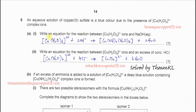Part one: write an equation for the reaction between the hexa aqua copper(II) ion and sodium hydroxide. This is a ligand exchange reaction. The hydroxide will substitute two H₂O in the hexa aqua copper(II) ion to form copper hydroxide, which is a precipitate. The two H₂O molecules that have been substituted are released, so you need to add plus 2H₂O on the product side.